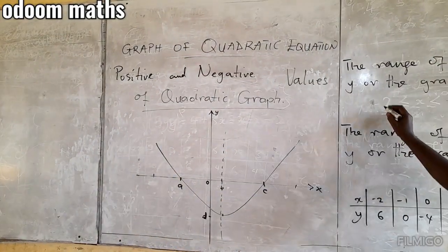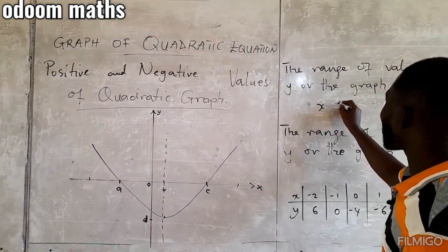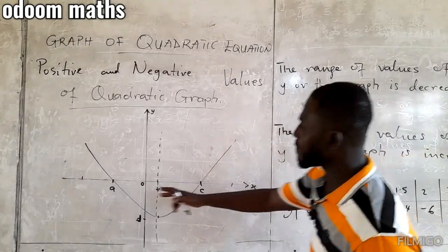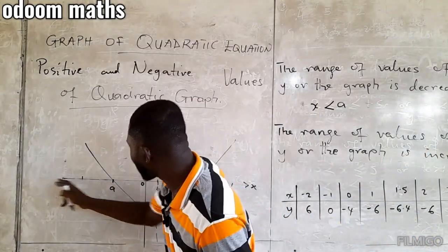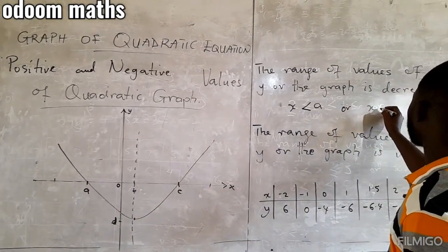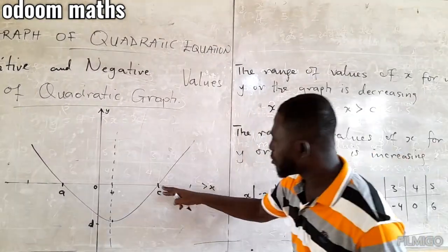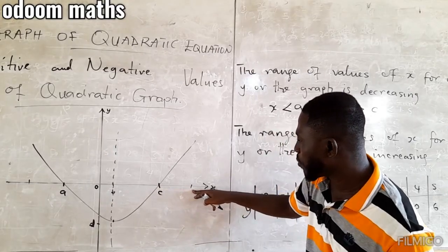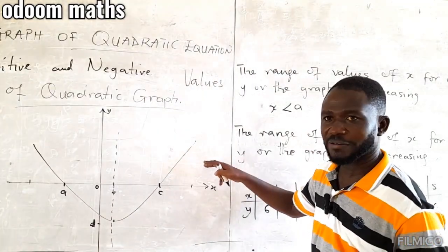We say that the x values that are less than a, because the values from here downwards are all less than this a. Then, all x values that are greater than c, those values here will make the graph to be positive.